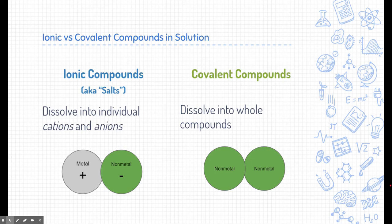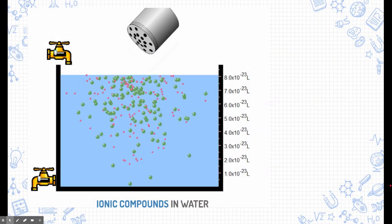Covalent compounds on the other hand act a little bit differently. When they dissolve they typically break apart but they don't break the compound itself. They dissolve into whole chunks or whole compounds. So let's take a closer look.